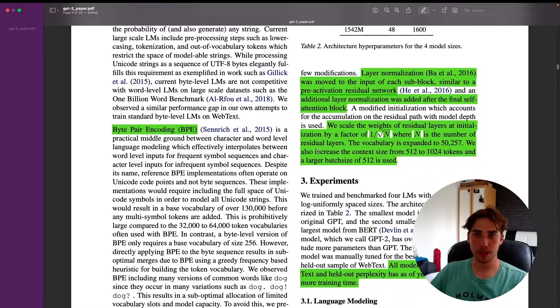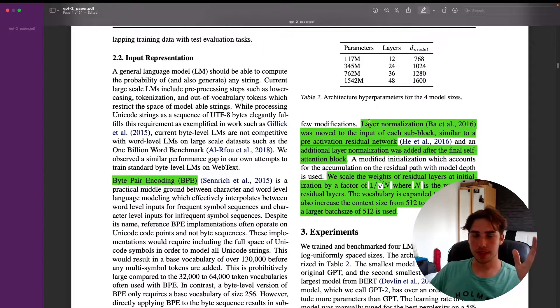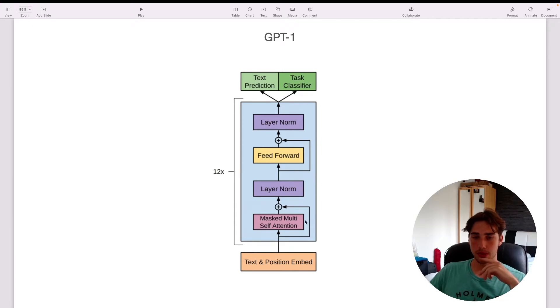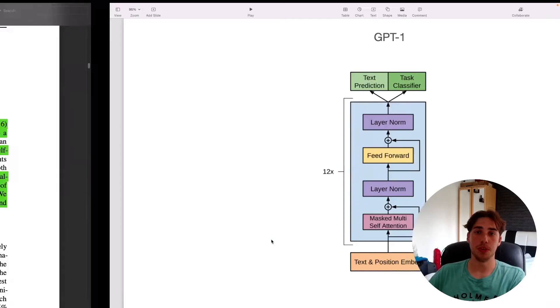When it comes to the architecture, the slight difference they do is they use layer normalization moved to each sub-block and they add layer normalization after the final self-attention block. This is how it looks like for GPT-1, and they just add layer normalization here. The architecture itself didn't change much; only the size and the amount of data they put into it has changed.